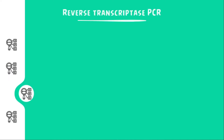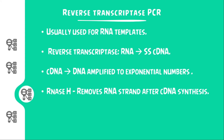Reverse transcriptase PCR is one of the techniques that aids in measuring RNA expression levels. Many samples, like viral samples, have RNA as their nucleic material. Reverse transcriptase PCR allows us to convert the RNA into complementary DNA. The cDNA produced is then amplified to exponential numbers. RNase H is used so as to remove all the RNA strands after cDNA synthesis.